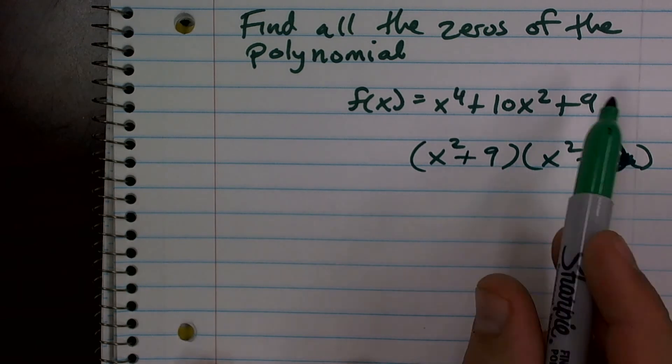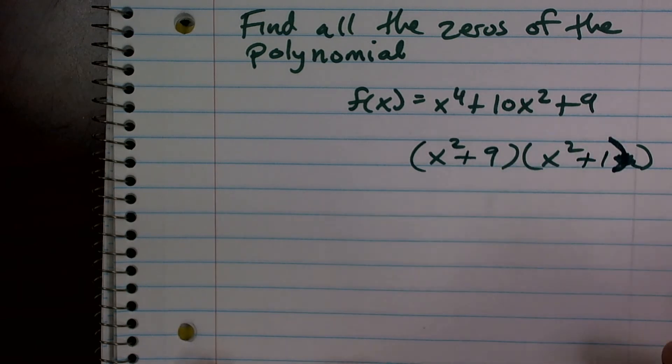So therefore, you multiply this, nine times one is nine. You do your middle terms, you get ten x squared, very good.